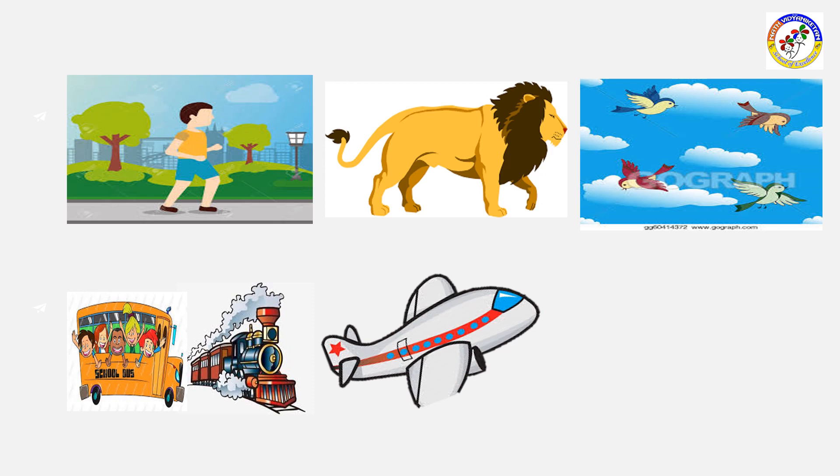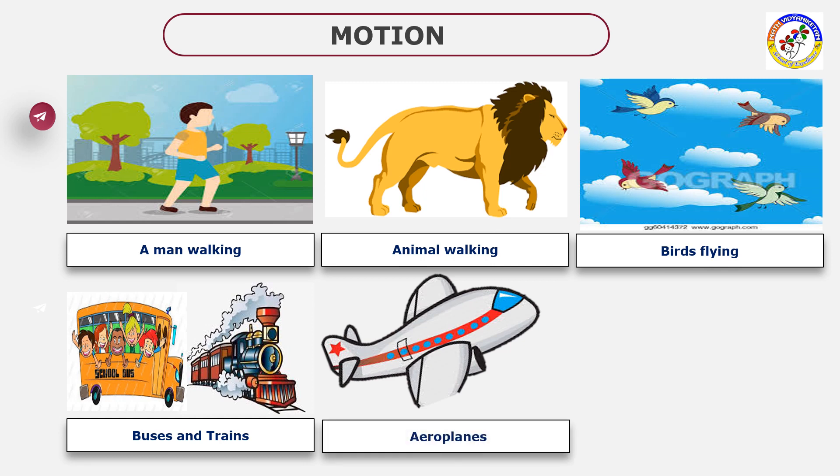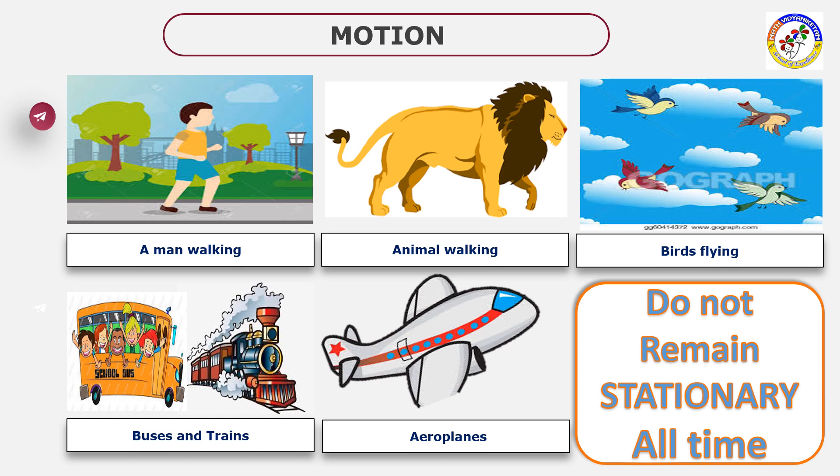Next diagram: a man is walking, birds are flying, buses and trains are running, an aeroplane is flying. All these are in motion. They don't remain stationary at all times.